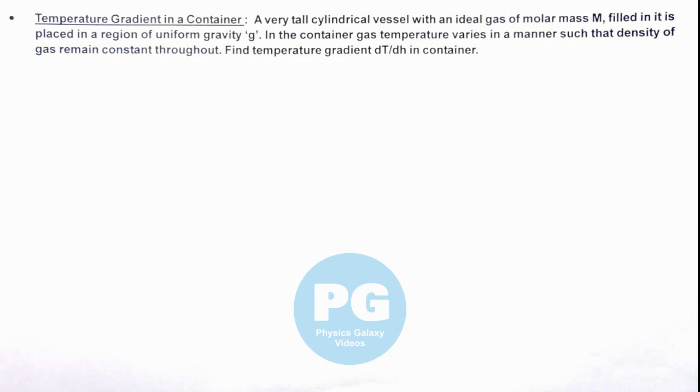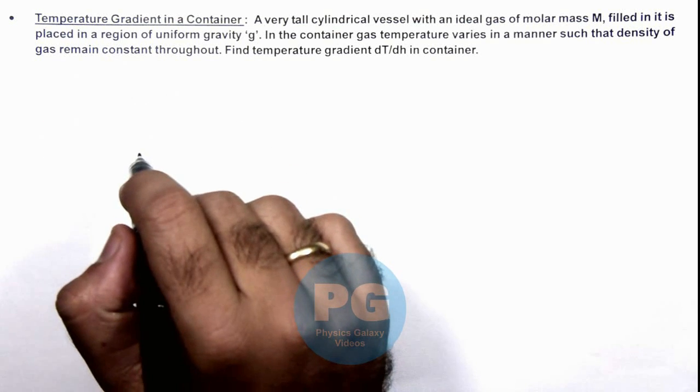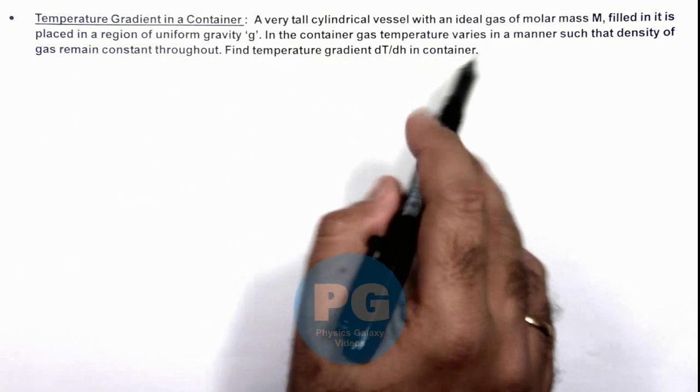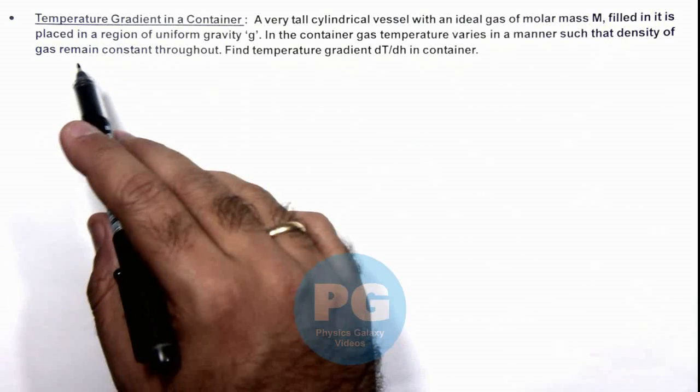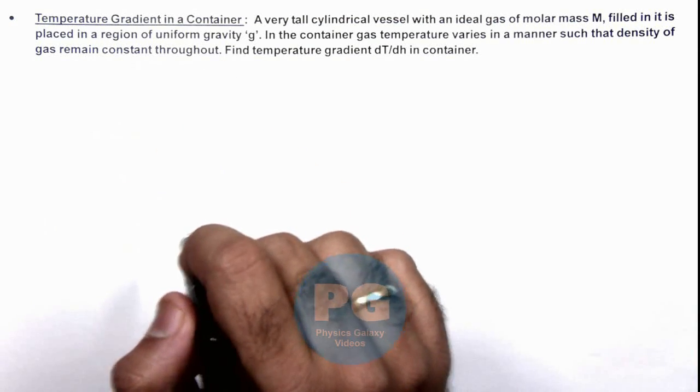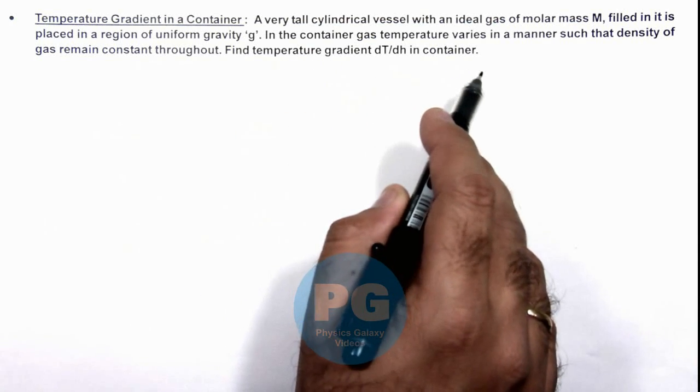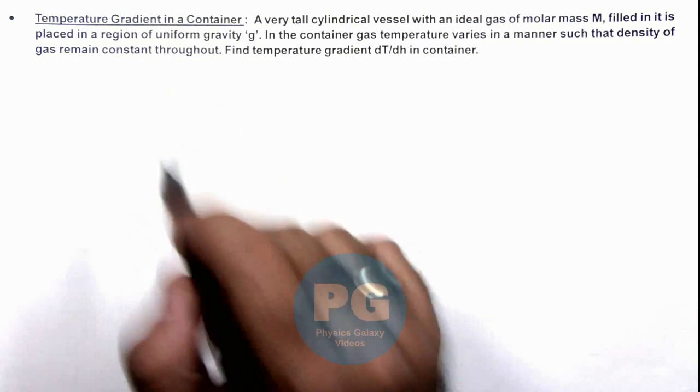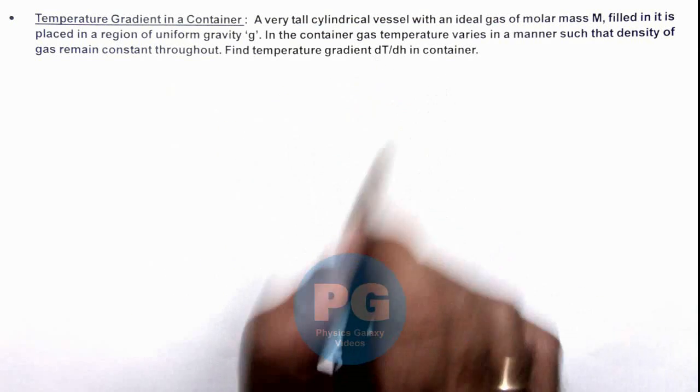In this illustration, we'll analyze the temperature gradient in a container. We are given that a very tall cylindrical vessel with an ideal gas of molar mass M filled in it is placed in a region of uniform gravity g. In the container, gas temperature varies in a manner such that density of gas remains constant throughout, and we are required to find the temperature gradient dT/dh in the container.